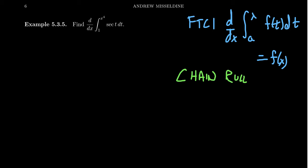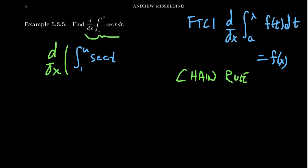If we think of the Fundamental Theorem of Calculus Part 1 as a derivative rule, we can combine it with other derivative rules like the chain rule. We're going to decompose this function — we need to take the derivative of two functions composed with each other. The outer function will be the integral from 1 to u of secant(t) dt, and inside it we'll place an inner function.